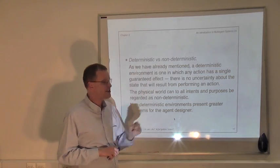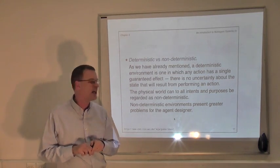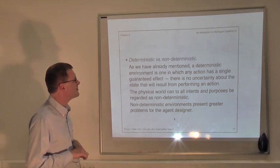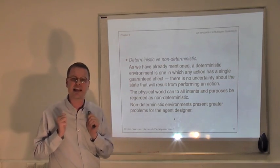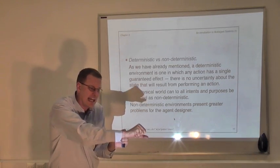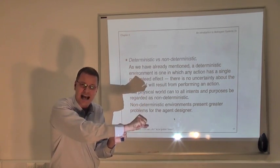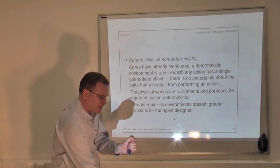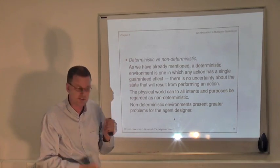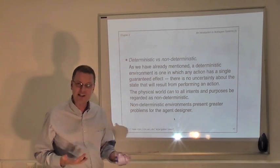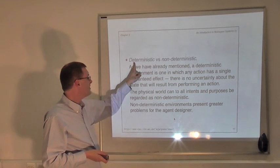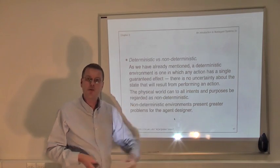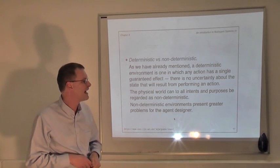The second property is determinism versus non-determinism, which is related to but not quite the same as the term used in automata theory. When we talk about determinism in respect to environments, an environment is deterministic if whenever I choose to perform an action, I know exactly what the outcome is going to be — there is a single outcome and I know exactly what it will be. If an environment is non-deterministic, then performing the same action can have multiple possible outcomes, and I don't know which one will actually happen. Clearly, the more deterministic an environment is, the easier it will be for an agent to operate in it; the more non-deterministic, the more unpredictable and harder it becomes.